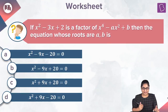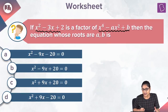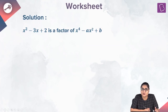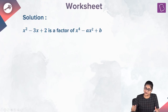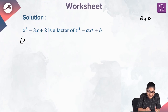In this question, we have been given that x square minus 3x plus 2 is a factor of x raised to the power of 4 minus Ax square plus b, and we have to form an equation whose roots are A and B. If we factorize x square minus 3x plus 2, we get x minus 2 and x minus 1.